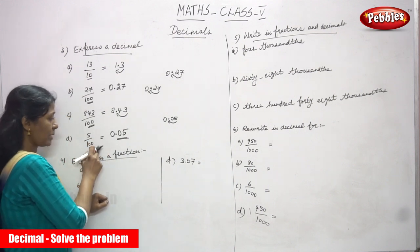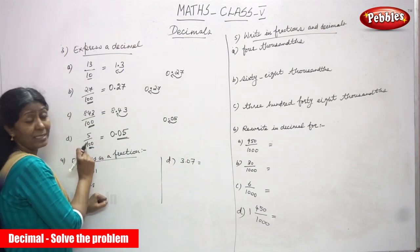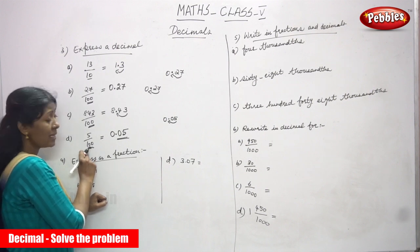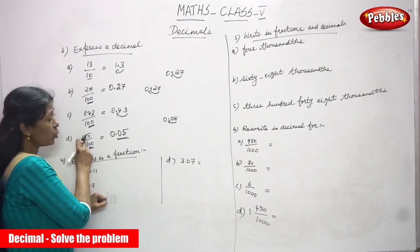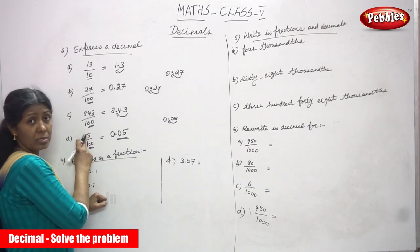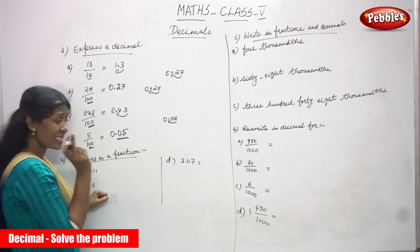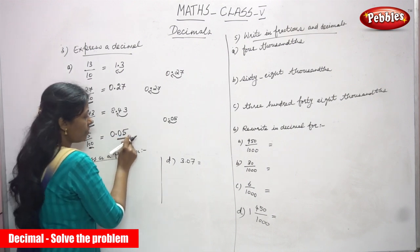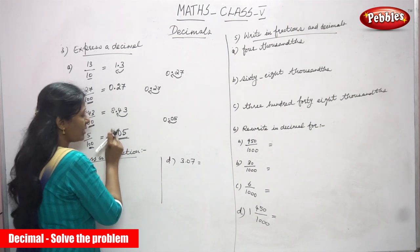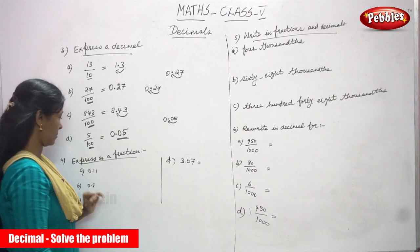For 5 by 100: the denominator has 2 zeros and the numerator has only 1 digit. You need 1 more digit. So write 5, then 0, then put a point, then write 0. The answer is 0.05.